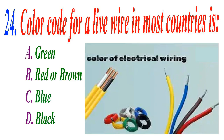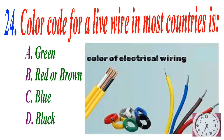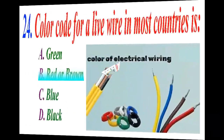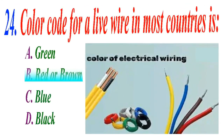Color code for a live wire in most countries is: A green, B red or brown, C blue, D black. The correct answer is B red or brown.